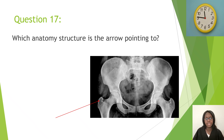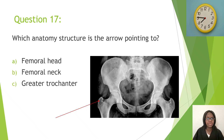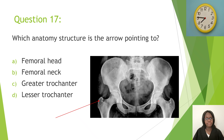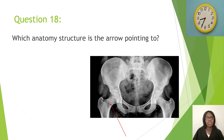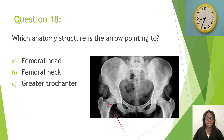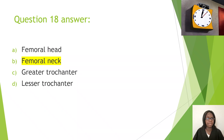Question seventeen: Which anatomy structure is the arrow pointing to? A, femoral head; B, femoral neck; C, greater trochanter; D, lesser trochanter. The correct answer is C, greater trochanter. Question eighteen: Which anatomy structure is the arrow pointing to? Same choices. The correct answer is B, femoral neck.